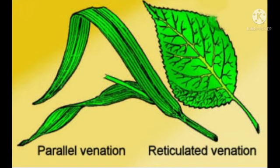There are two types of venation: reticulate venation and parallel venation. In reticulate venation, all the veins are interconnected in a complex manner, forming a net-like structure. In parallel venation, all the veins run parallel to each other.